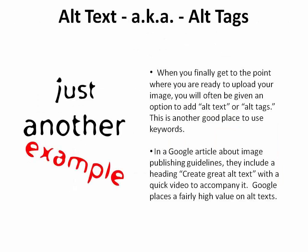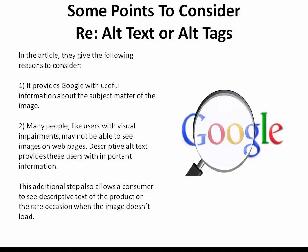Alt Text, also known as Alt Tags. When you're ready to upload your image, you will often be given an option to add alt text or alt tags — this is another good place to use keywords. In a Google article about image publishing guidelines, they include a heading, 'Create Great Alt Text,' with a quick video to accompany it. Google places a fairly high value on alt text. It provides Google with useful information about the subject matter of the image, and it helps users with visual impairments who may not be able to see images on web pages. Descriptive alt text also allows customers to see descriptive text on the rare occasion when the image doesn't load.